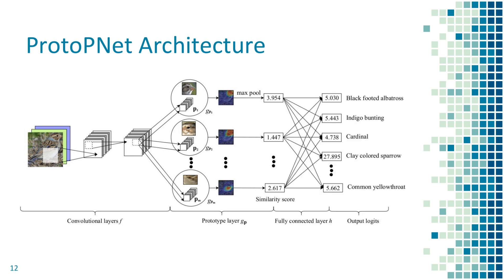Every prototype unit in the prototype layer produces such a similarity score, and those similarity scores are weighted by the fully connected layer to produce the output logits, the final scores for all the classes. Our special prototype layer can be used on top of any deep convolutional feature extractors to enhance the model's interpretability.